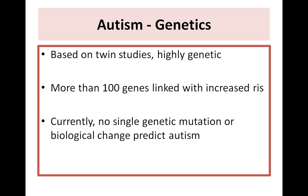Autism is highly genetic, and this is based on twin studies. There are more than 100 genes which have been linked with increased risk. Currently, there is no single genetic mutation or biological change that can predict autism.